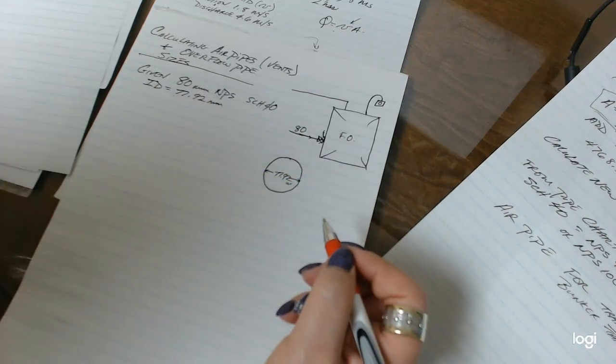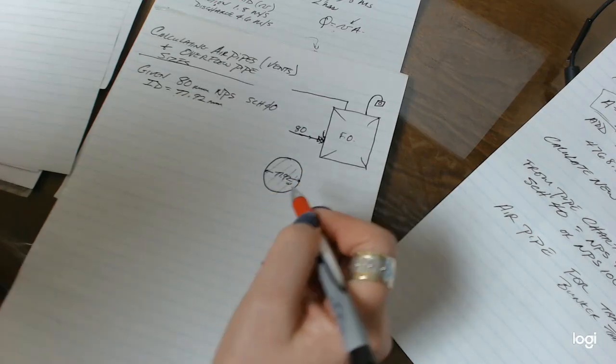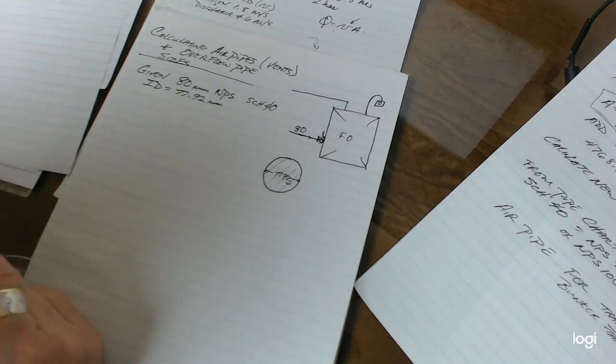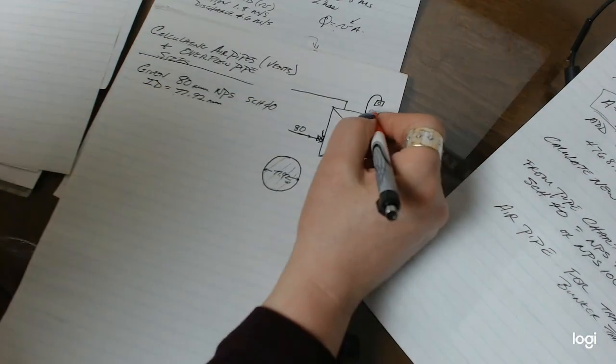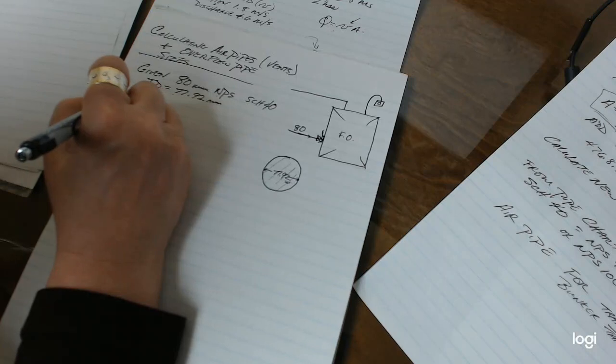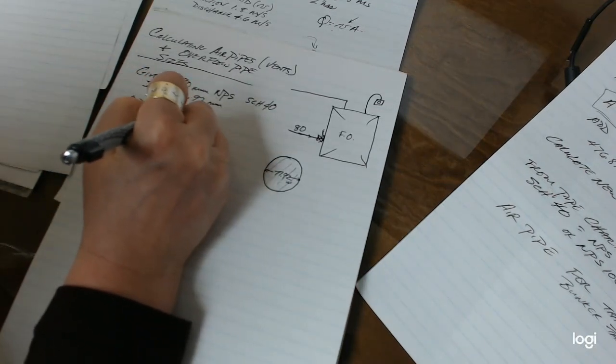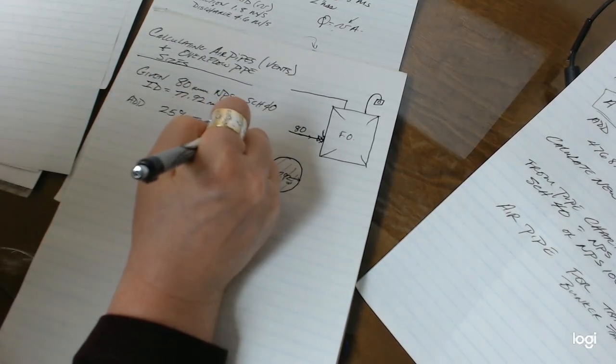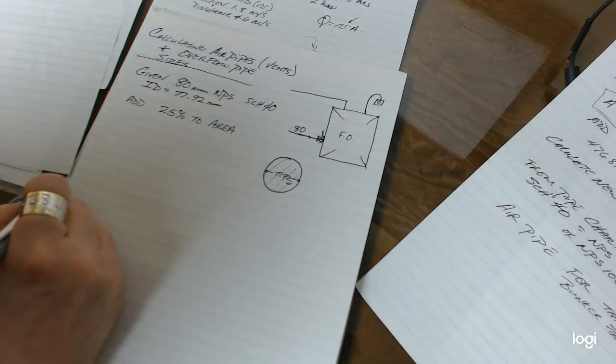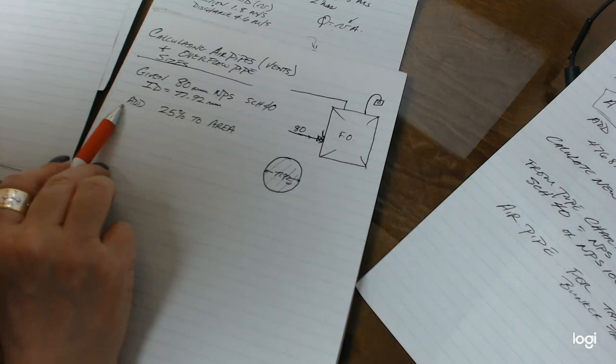In order for us to do the calculation on this, we actually had to look at the area of the circle that would be like taking a slice out of the pipe. Because according to the rules, in order to calculate the size for these two pipes, we actually have to add 25% to the area, to the area of the pipe. And if you want some clarification on this, you can find this in part 5 of Lloyd's Rules under Chapter 13.